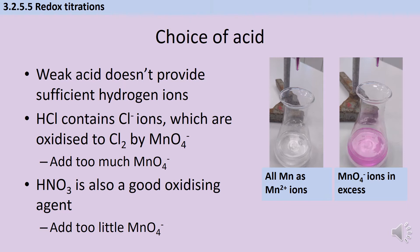When acidifying potassium permanganate, our only choice is sulfuric acid. We must use a strong acid to keep the solution sufficiently acidic, so a carboxylic acid like ethanoic acid would not be appropriate. We can't use hydrochloric acid because chloride ions can be oxidized by manganate ions, causing more manganate to be consumed than intended. We also can't use nitric acid because it's itself a strong oxidizing agent and would react with whatever you're trying to oxidize, giving wrong titration numbers. So instead we use sulfuric acid.